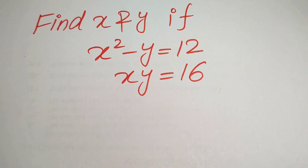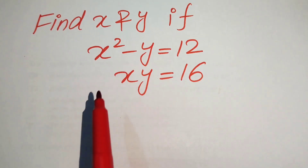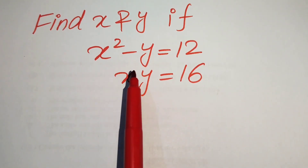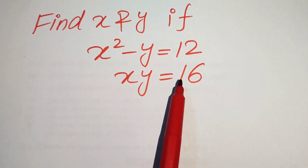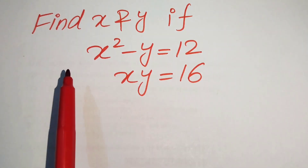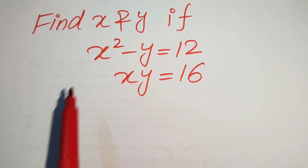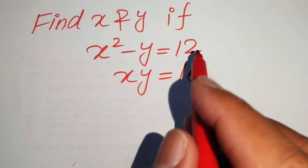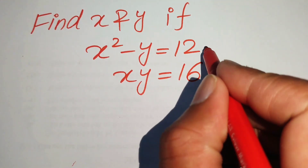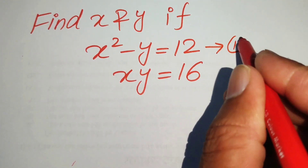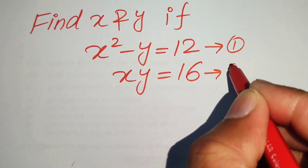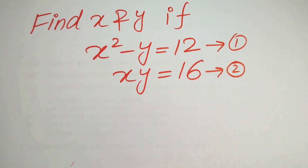Welcome everyone. We have a nice algebra problem: x squared minus y equals 12, and x times y equals 16. We need to find the values of x and y. We call the first equation number one and the second equation number two.